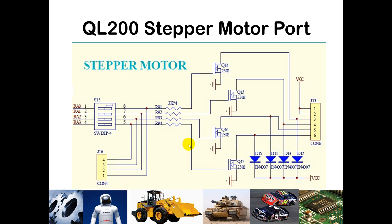This is the schematic for the stepper motor port on the QL200 trainer kit. The stepper motor plugs into a white socket just before the breadboard — a six-pin header. To use it, you'll want to turn on the switches connected to RA0 through RA3. We haven't used those previously because we've been using RA0 through RA3 for other things like the seven-segment display, LCD, or LEDs. In this lab, we're going to use them to control our stepper motor.